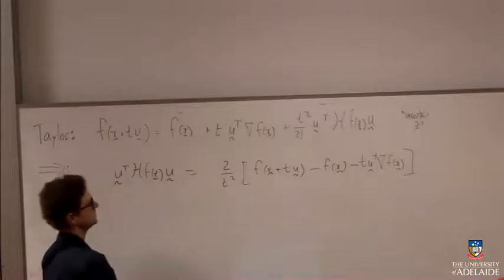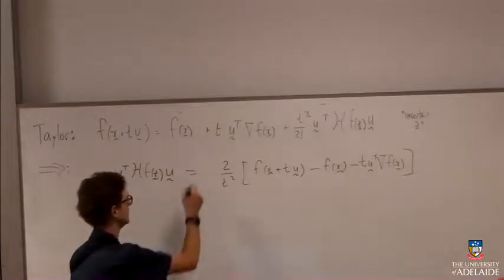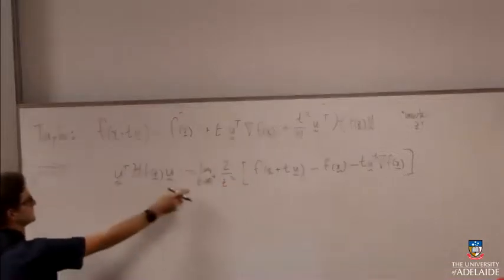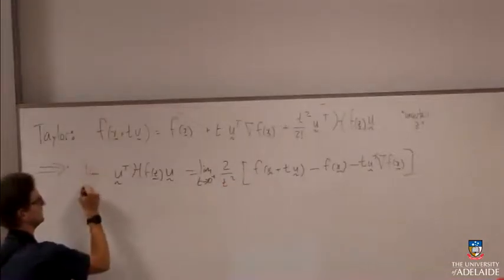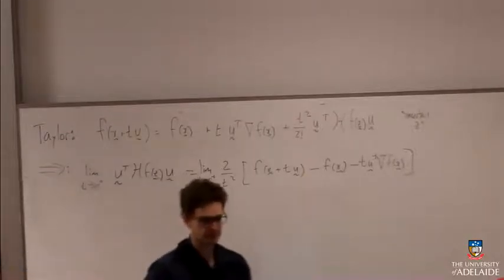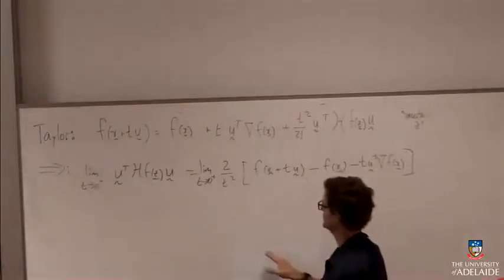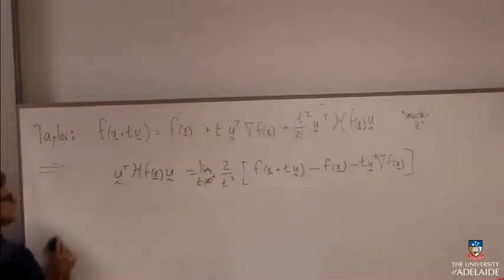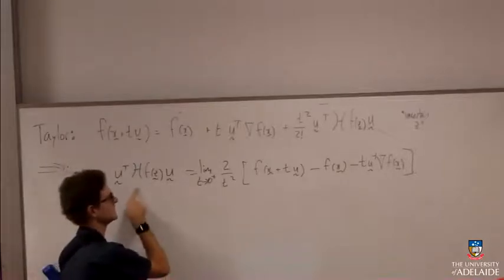Now if I take the limit of both sides here, as t approaches zero from above, well, if I take the limits of both sides, I mean there's no t on that side. So I don't even need to write that out there. That's a constant no matter what t is.